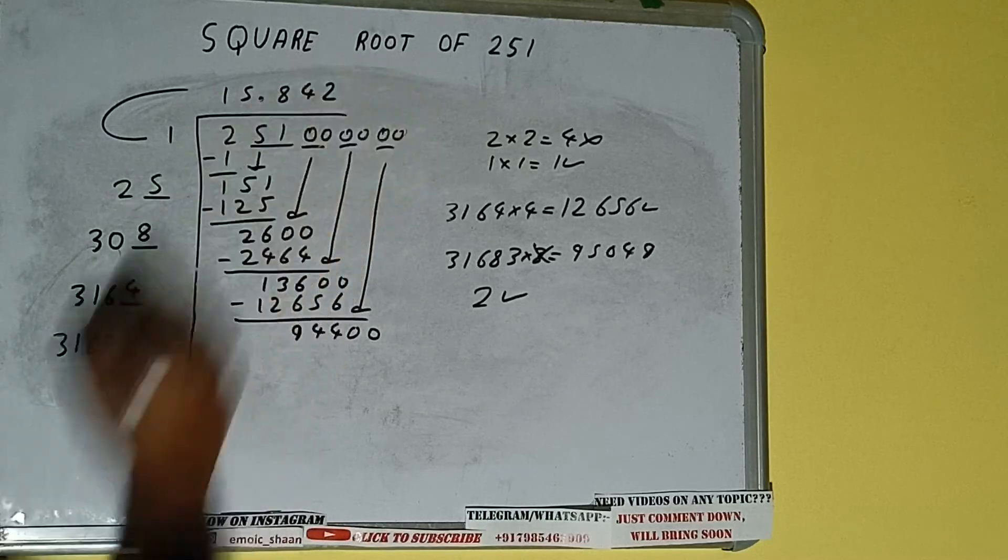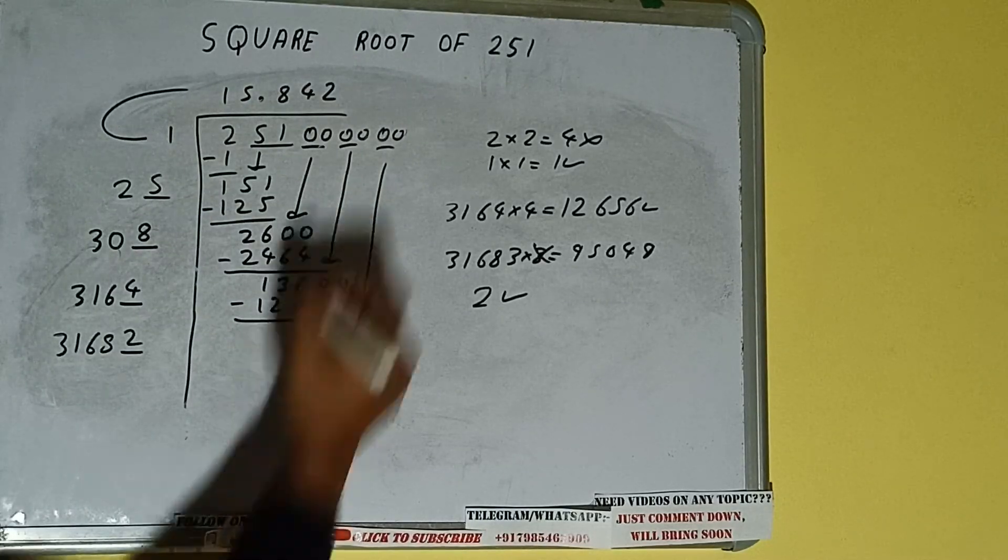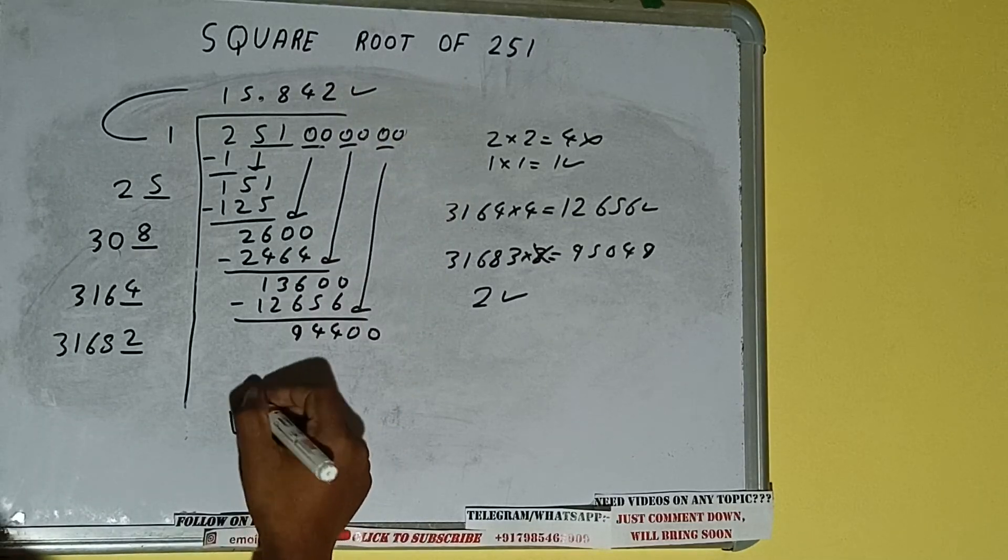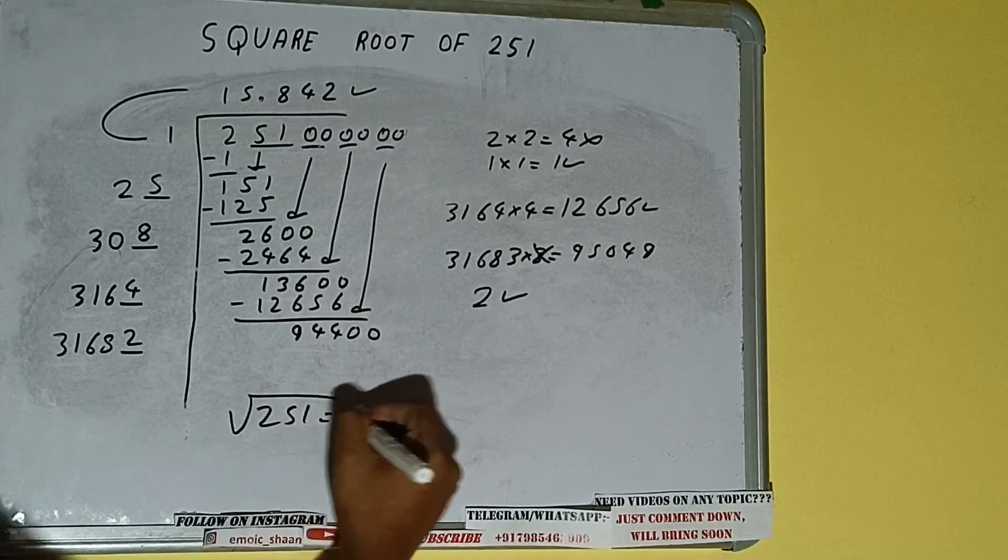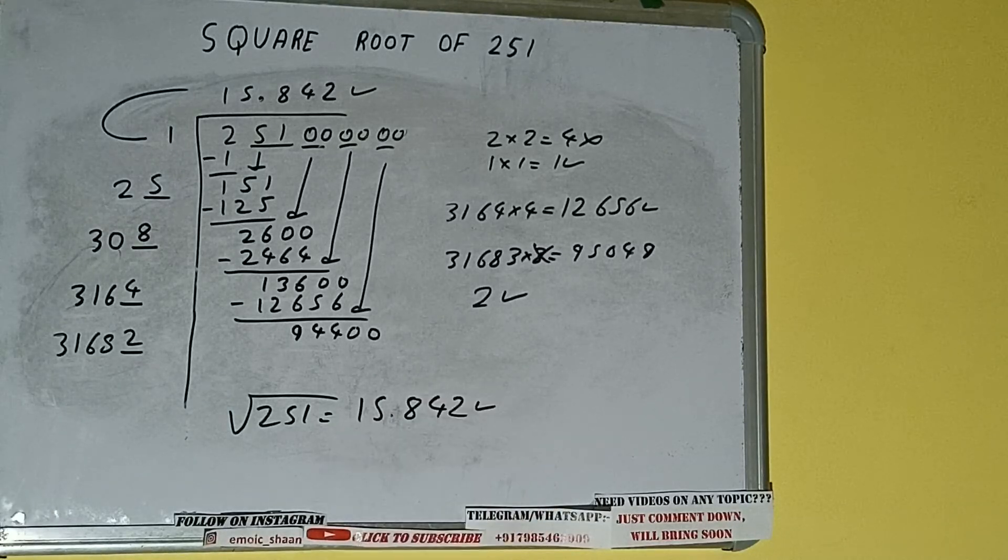So two here and two here, but we don't need to calculate because we got the answer correct up to three decimal places. So square root of 251 will be 15.842, that will be the answer.